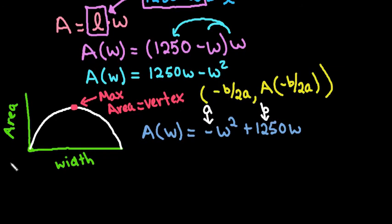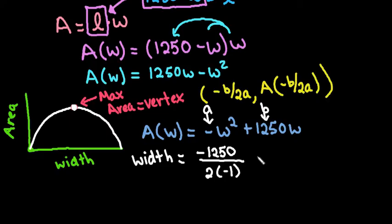So we can find our width of our maximum point up here. Okay, so my B term would be 1250, so I would have negative 1250 divided by 2 times my A term, which ends up giving me 625 yards. So in order to maximize the area, the width needs to be 625 yards.